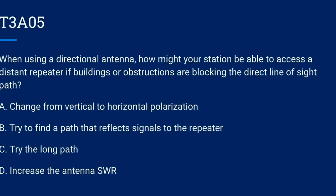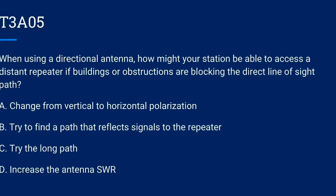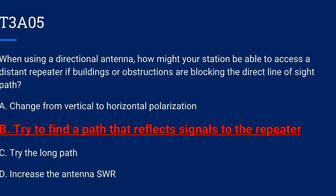T3A05. When using a directional antenna, how might your station be able to access a distant repeater if buildings or obstructions are blocking the direct line-of-sight path? A. Change from vertical to horizontal polarization. B. Try to find a path that reflects signals to the repeater. C. Try the long path. Or D. Increase the antenna SWR. Correct answer is B: try to find a path that reflects signals to the repeater.